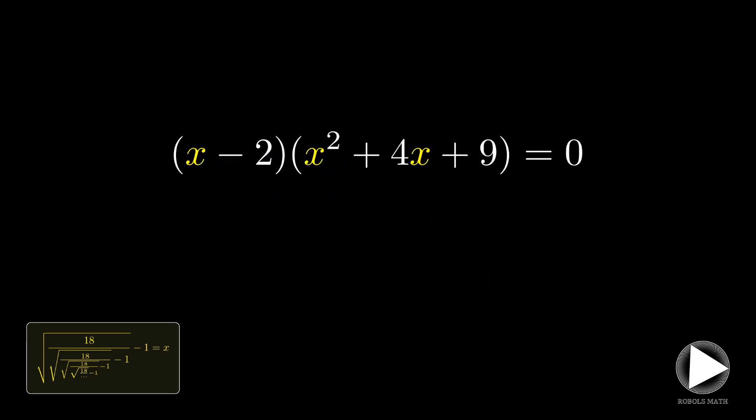The roots of this quadratic polynomial are candidates for the value of the continued fraction. Note, however, that the discriminant of this is 4 squared minus 4 times 1 times 9, which is less than 0. This means that the roots of this polynomial are imaginary. Therefore, 2 is indeed the only valid value for this continued fraction.